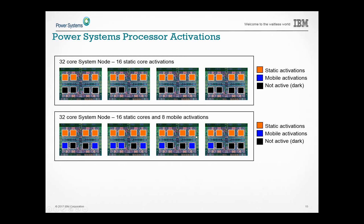The same concept applies to mobile activations — those can be turned on anywhere. There are techniques to influence where they land: start an LPAR with 32 cores worth of capacity, DLPAR 8 off, and then the hypervisor remembers that placement. If you later want more cores, it will try to light them up on the same node where it originally had them. This relates to deeper discussions about Power VP, affinity, and ASO-DSO in AIX.